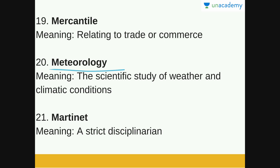Meteorologists are the people who tell us the weather forecast — they will tell us if it's going to be sunny or if there are chances of rain, and the minimum and maximum temperature of the day. In the rainy season, the meteorologist will tell us where it's expected to rain the most and how much it will rain. So meteorology is the scientific study of weather and climatic conditions.